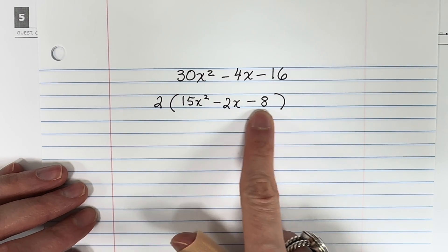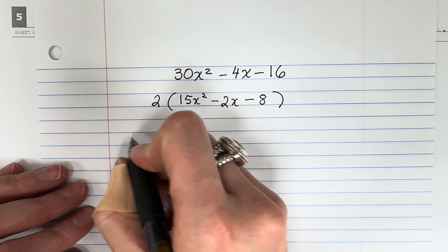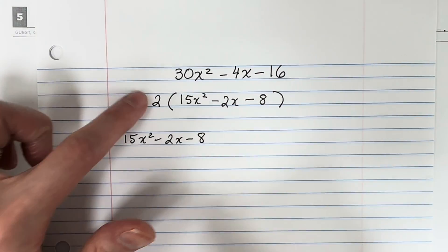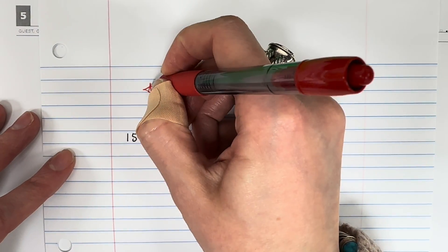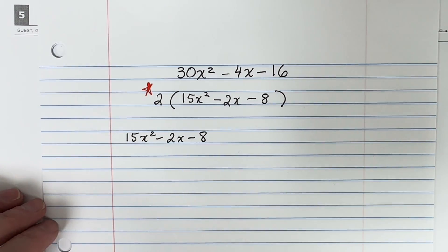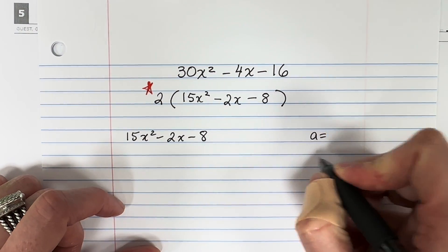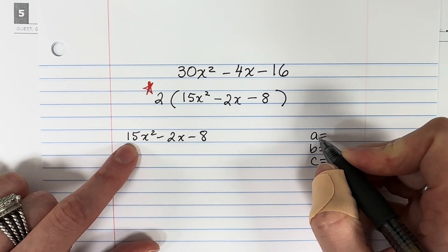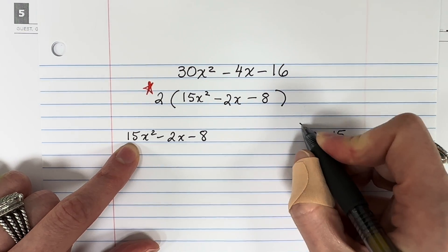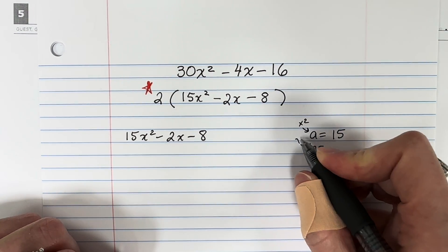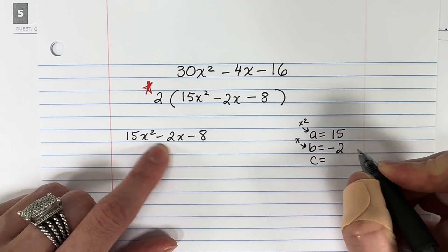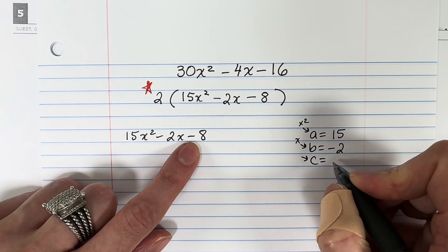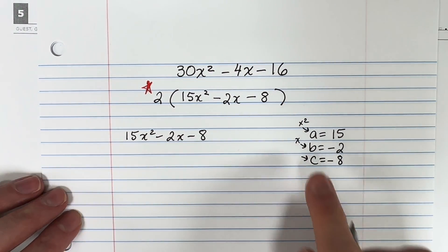Now we're going to factor the trinomial in the middle: 15x squared minus 2x minus 8. Don't forget about this 2 — I'll put a little star here so we return to it. We're going to use the ABC method. A is the number with the letter squared, so A is 15. B is the number with just the letter, which is negative 2. C does not have a variable, so C is negative 8.